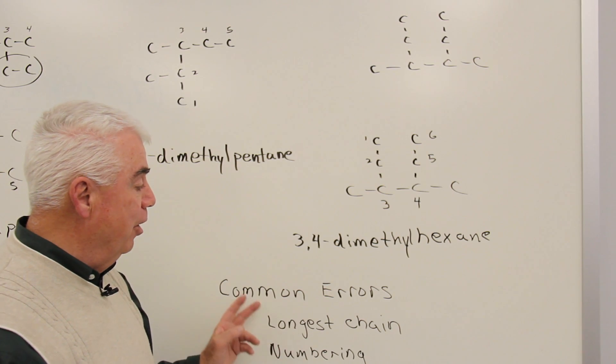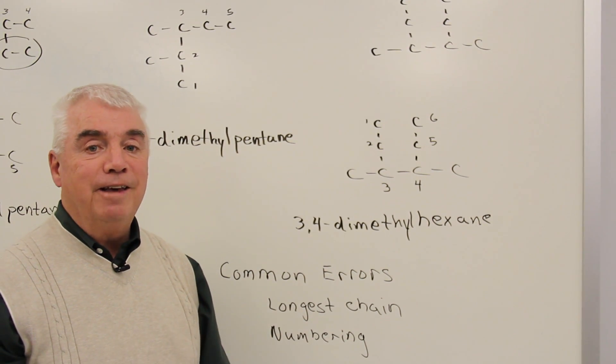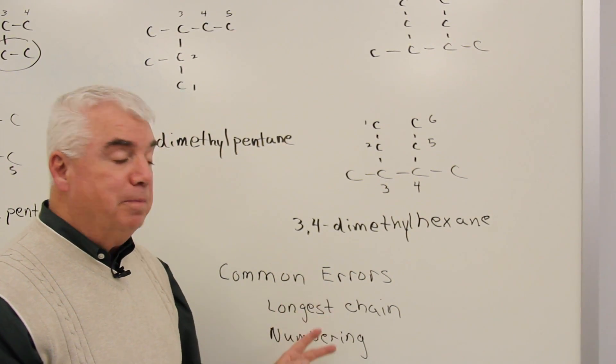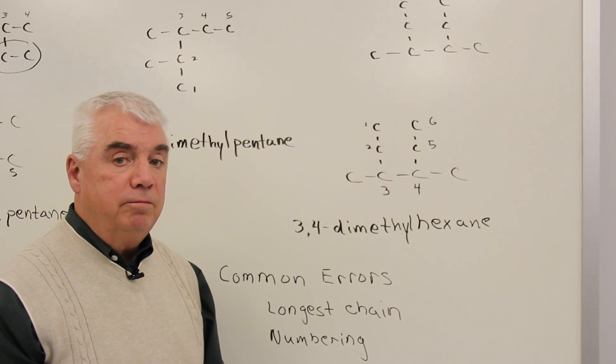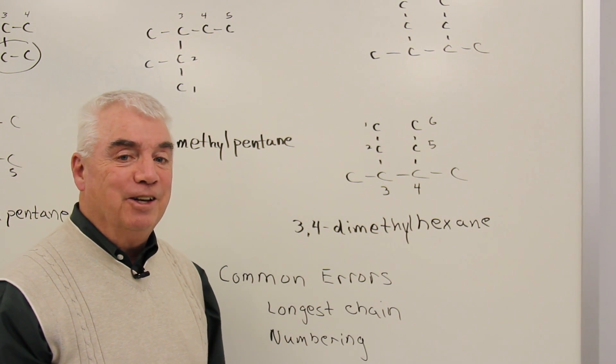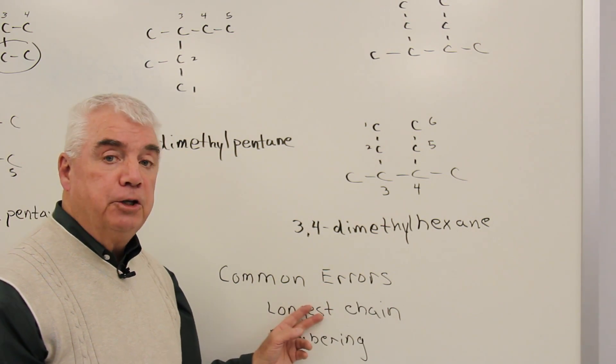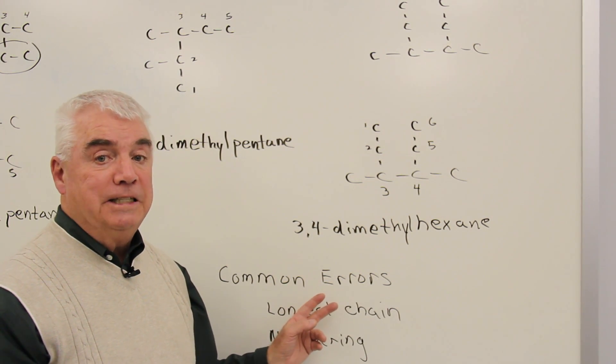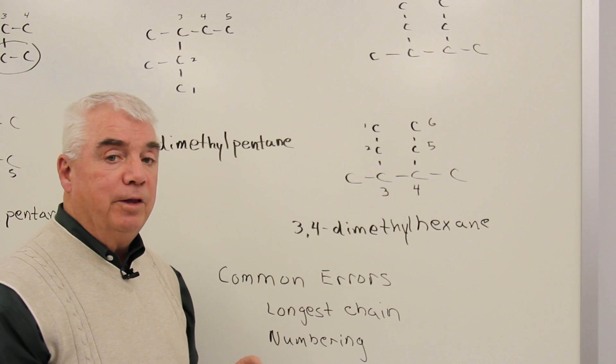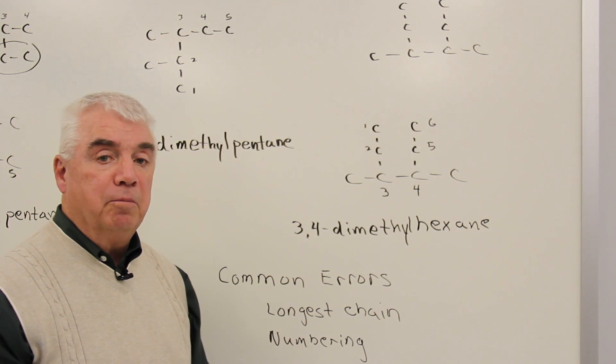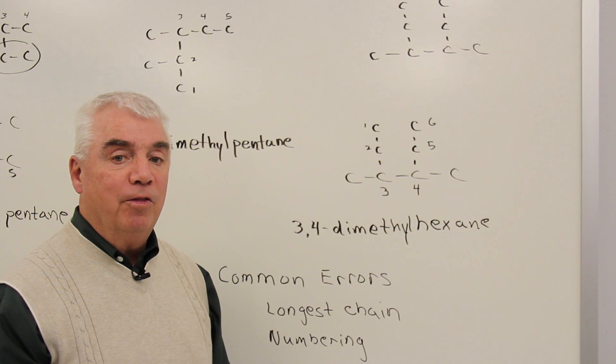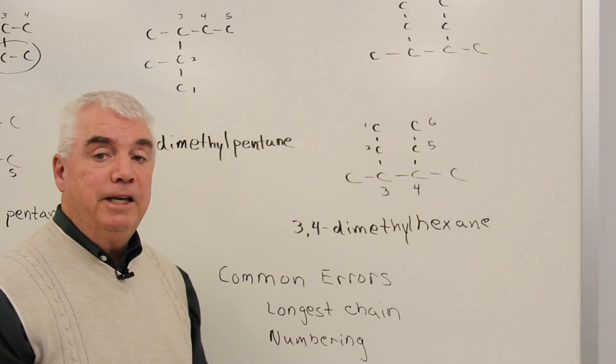Remember the two most common errors that you might make in giving an alkane an IUPAC name. Not picking out the longest chain. Remember to zig and zag and try all sorts of combinations. And the longest continuous chain that you come up with is usually the correct one. And then the second most common error is numbering the longest chain from an end nearest the branch.